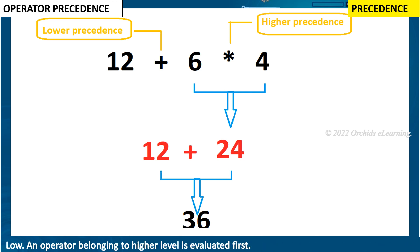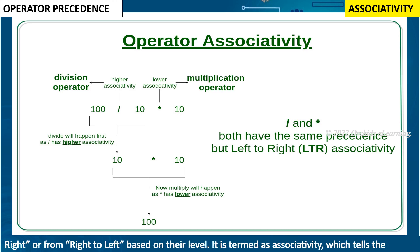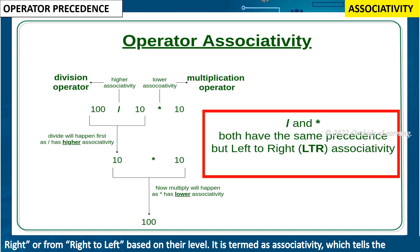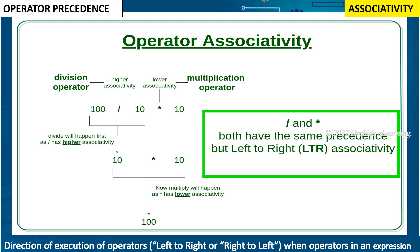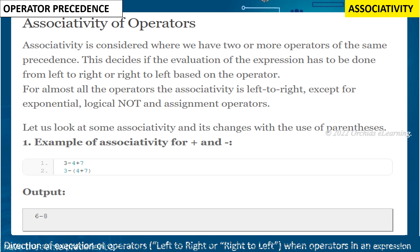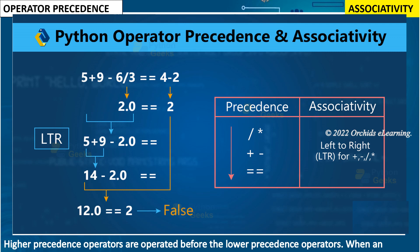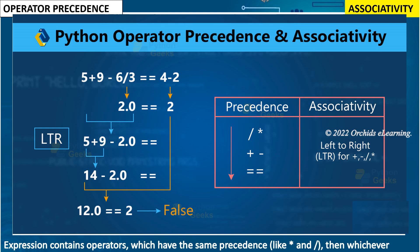An operator belonging to a higher level is evaluated first. If two operators have the same precedence priority, then they are either evaluated from left to right or from right to left based on their level. This is termed as associativity, which tells the direction of execution of operators — left to right or right to left — when operators in an expression have the same precedence. Higher precedence operators are operated before lower precedence operators.